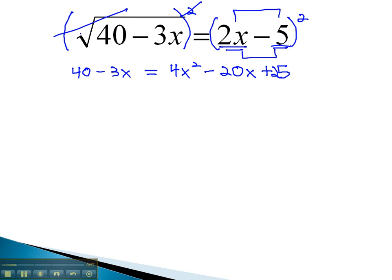Just as before, to solve an equation with x squared, we must make it equal to 0 and factor the equation. Because x squared is already positive, let's move everything to the right by subtracting 40 and adding 3x to both sides. When we do, we get 0 equals 4x squared minus 17x minus 15.